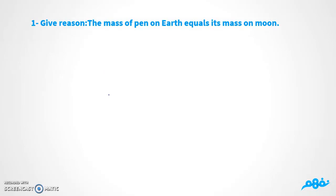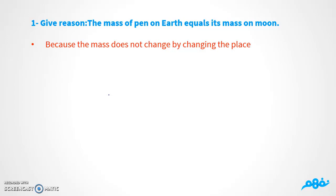So I would like you to ask yourself: the mass of a pen on Earth equals its mass on the Moon. Why? Because if Adam was on the Moon with 1,500 grams, and we send him to the Earth, he will still have 1,500 grams — the same mass. Because the mass does not change by changing the place.